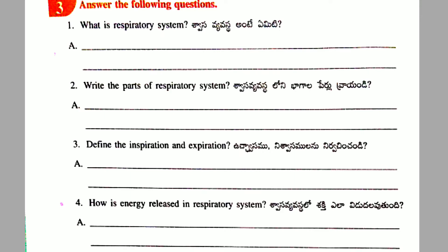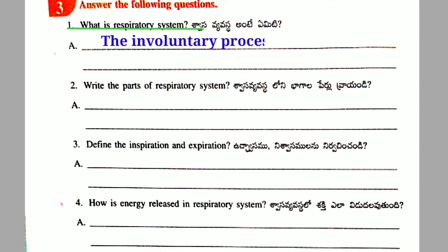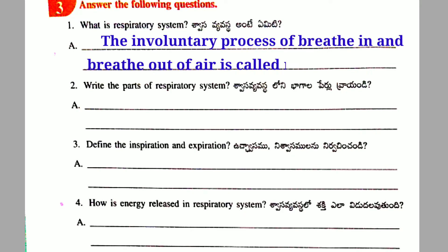Third activity: Answer the following questions. First one — What is Respiratory System? The involuntary process of breathing in and breathing out of air is called respiration.